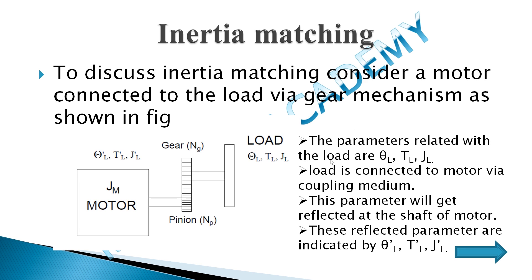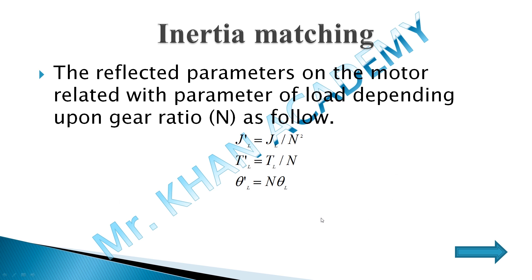The parameters related to the load are θl, Tl, and Jl. When the load is connected to the motor via coupling, these parameters are reflected at the motor shaft as θ'l, T'l, and J'l. The relationships in terms of gear ratio n are: J'l = Jl/n², θ'l = θl/n, and T'l = Tl/n. These are important relationships to keep in mind.